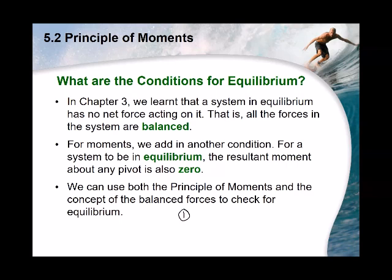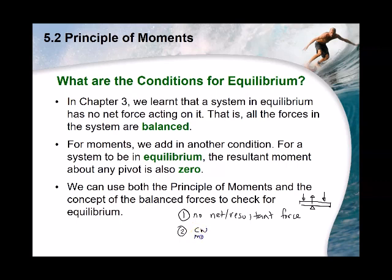Condition one: no net or resultant force acting on the object, so the total downward force equals the total upward force and the beam is not moving. Condition two: no resultant moment, meaning the sum of clockwise moments equals the sum of anti-clockwise moments.